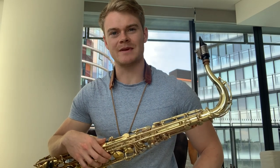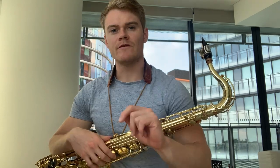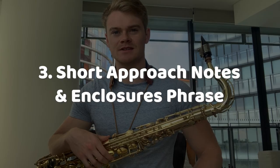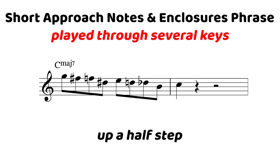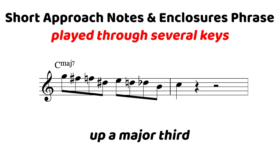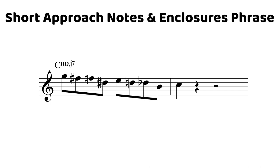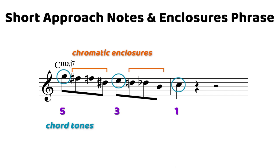With that out of the way, let's jump into some phrases that directly apply these concepts. First, let's check out a short phrase. Looking at this phrase straight away, we can see that we have chord tones landing on the downbeat. We are starting on the fifth, we have the third on beat three, and then we resolve nicely to the root note of the next measure. So how are we joining these chord tones together? We are using chromatic approach notes and enclosures — more specifically, with this particular phrase, we actually have two enclosures. We have the two chromatic notes above, one chromatic note below, and that happens twice here.